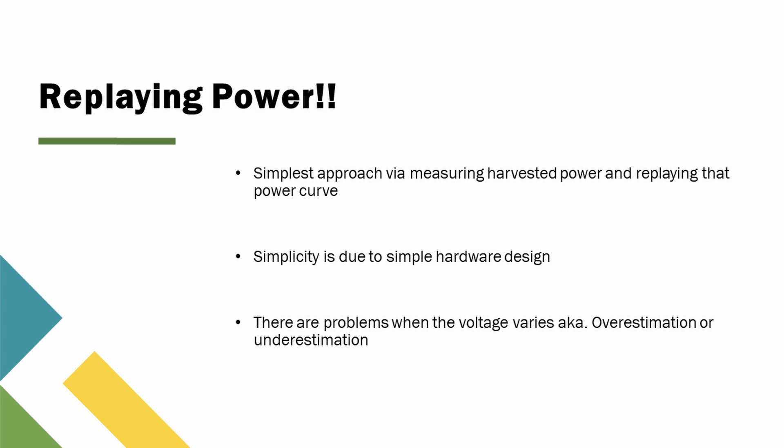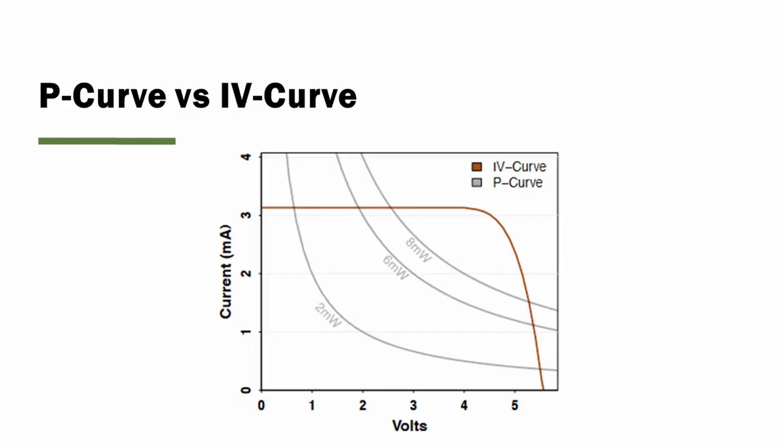The simplest approach would be to measure harvested power as the device executes and then replay that collected power. Replaying a power trace is simple and predictive, mainly due to the simple hardware design it takes to do this. For devices with a constant supply voltage, this is an easy task. However, varying the voltage causes power traces to either overestimate or underestimate energy that can be harvested. Devices that store energy in small batteries or capacitors end up exploring much more of the IV curve while harvesting energy. As seen in this diagram of a solar IV curve, various power curves can be inferred from just a singular IV curve, meaning that using a singular power curve is a poor replacement for emulating the whole actual IV curve.